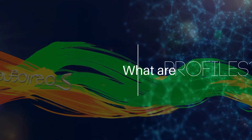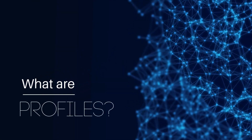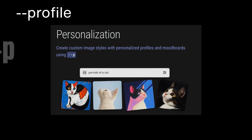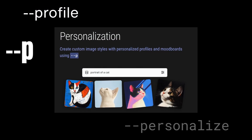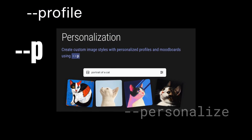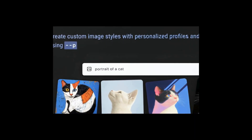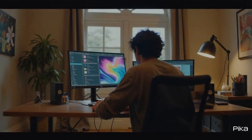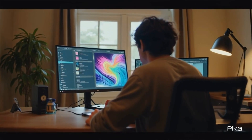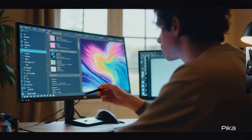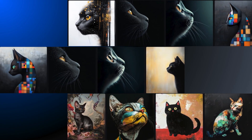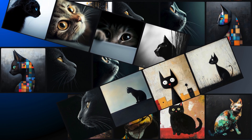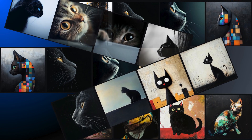The Midjourney Profile parameter, formerly called the Personalize parameter, lets you customize the AI's style to match your own visual tastes. You tell Midjourney what you like, and it builds you a unique style. Midjourney integrates your visual style into the images it generates. The results are more personal, more unique.